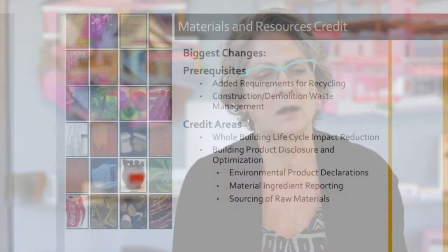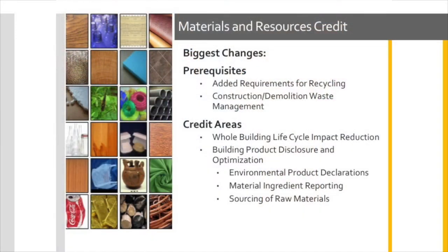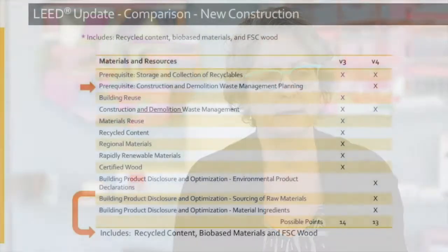The materials and resources credit — the biggest changes to that are a prerequisite adding requirements for recycling on the job site and construction and demolition waste management. In the credit areas, whole building lifecycle impact reduction has been added as a credit area, and building product disclosure and optimization, which we will explore much more thoroughly, is also a new addition to this credit area.